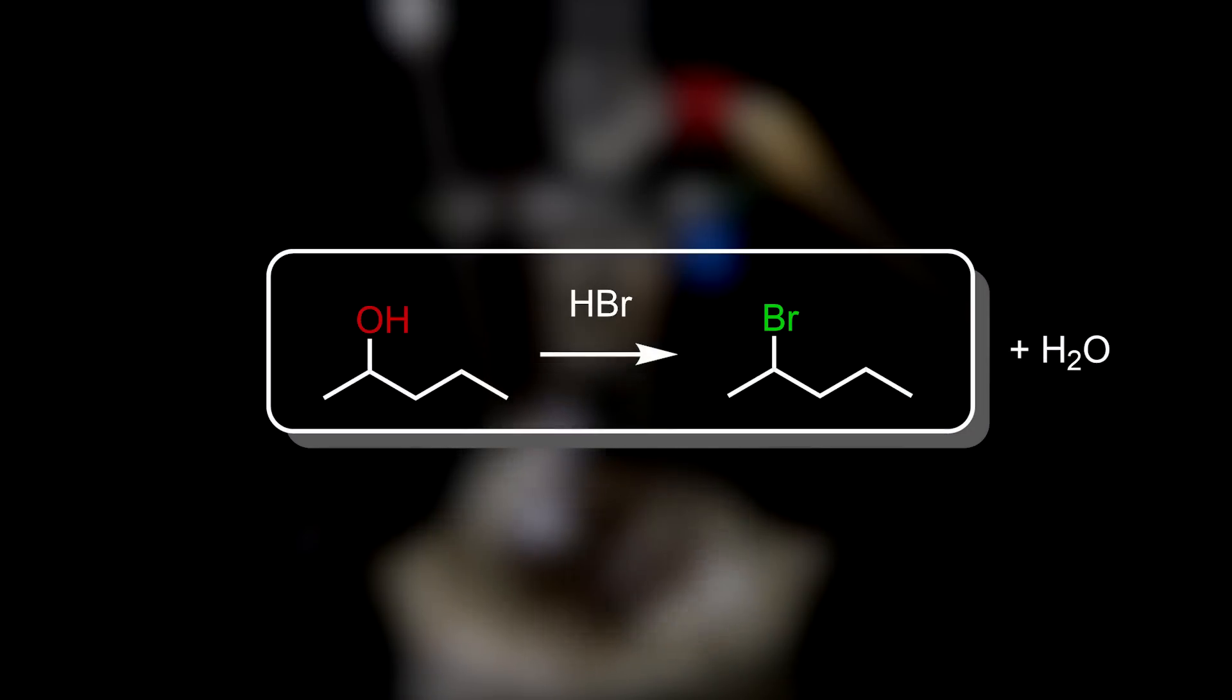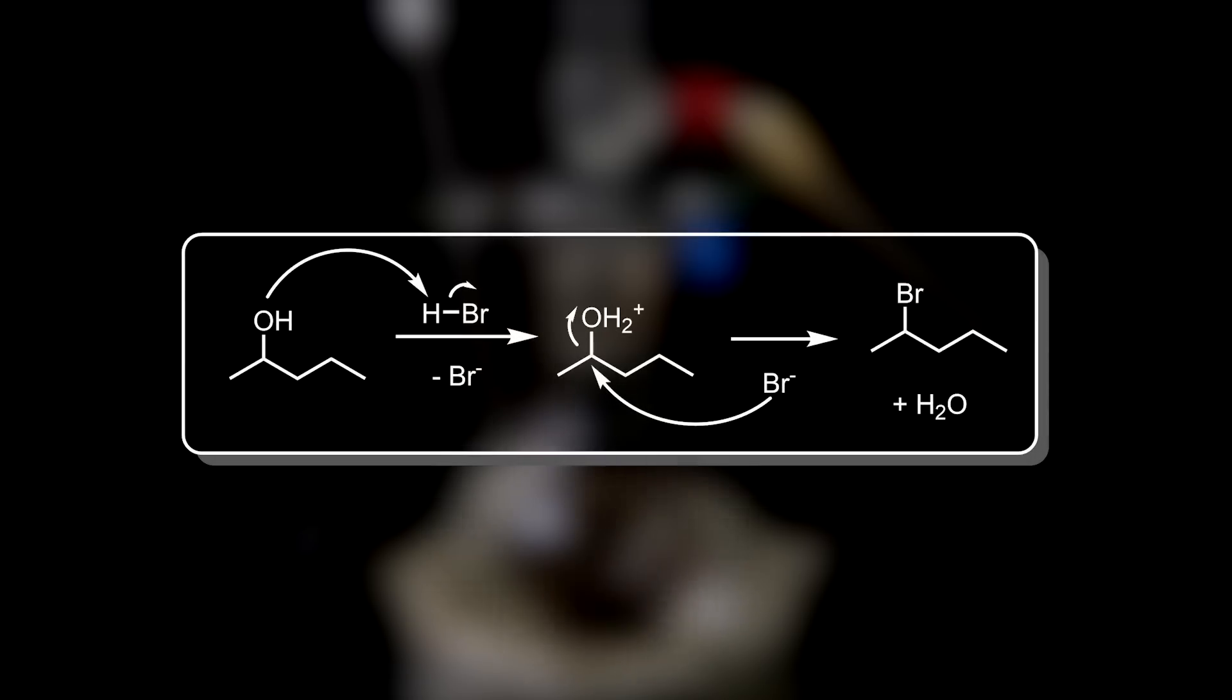In this simple reaction, the alcohol of 2-pentanol is replaced by a bromine. How it works is that the strong acid protonates the alcohol, which forms a great leaving group. The bromide ion can then quickly attack the carbon and kick off water, giving the product 2-bromopentane and water.